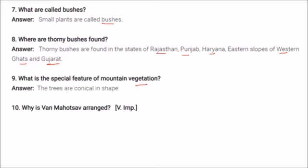The special feature of mountain vegetation is that the trees are conical in shape.